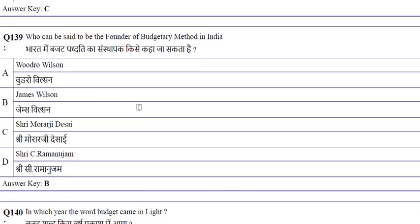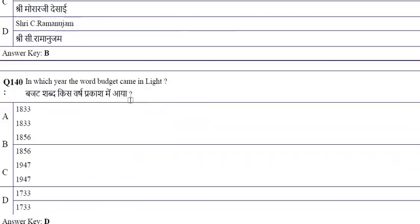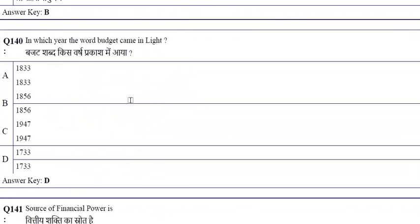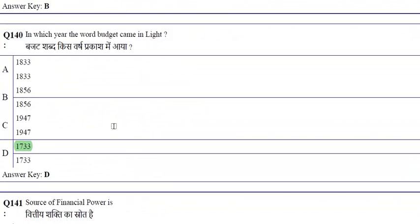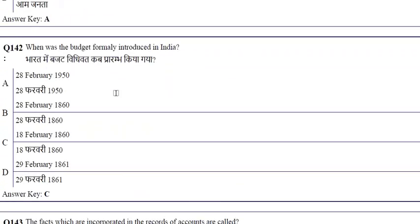James Wilson is said to be the founder of the budgetary method in India. The word 'budget' came into use in 1733. The source of financial power is the legislature.